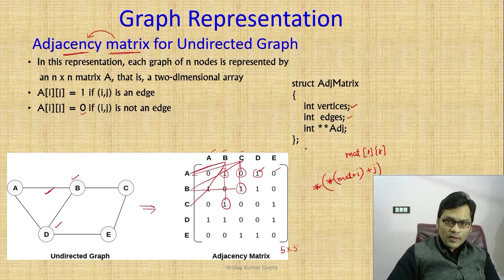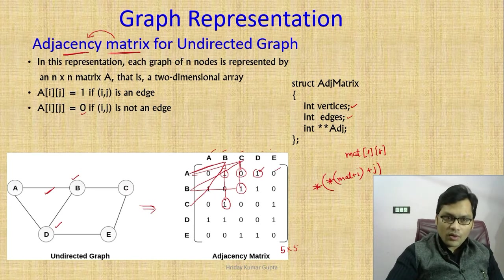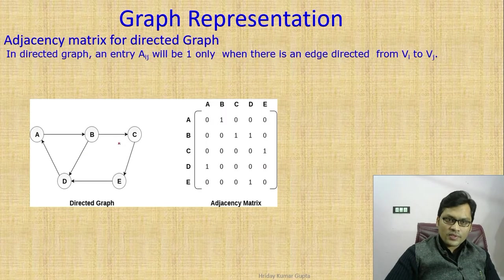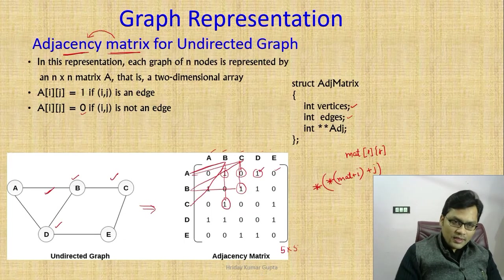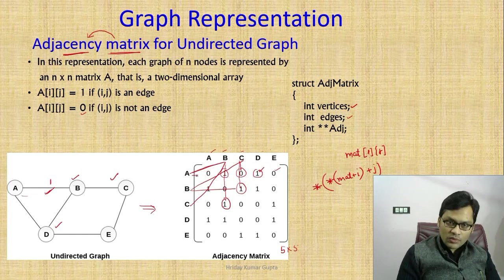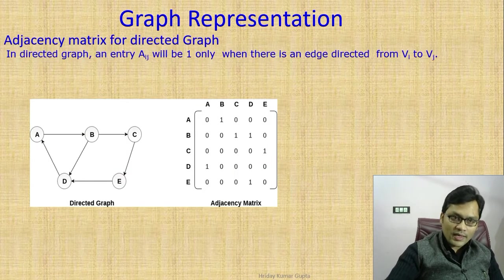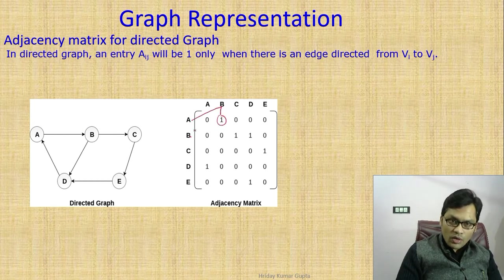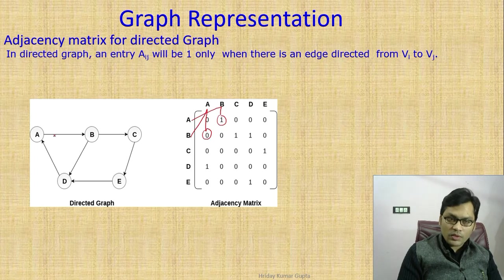This was about adjacency matrix for undirected graph. Now for directed graph — in the undirected graph, there was no direction so both directions were considered. But in a directed graph, we only consider A to B, not B to A. So A to B is 1 but B to A is 0. That is a directed graph.